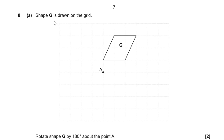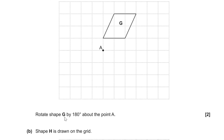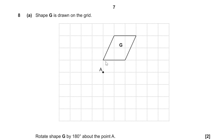Question 8. Shape G is drawn on a grid. To rotate shape G by 180 degrees about the given point, each vertex is mapped in the opposite direction. For example, one unit up becomes one unit down; two across one up becomes two the other way and one down. Joining the new points gives the rotated shape.